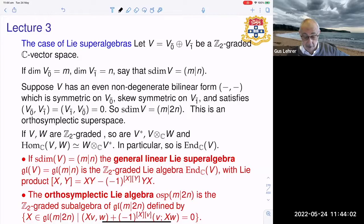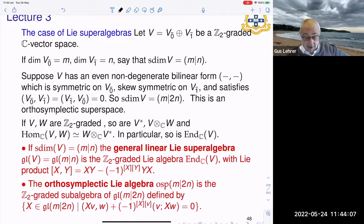So the orthosymplectic Lie algebra is a Z_2 graded subalgebra of gl(m|2n) which is defined by the following equation. It's very similar to the case of a Lie algebra in the non-super world. You simply insist that <x,v,w> plus a certain sign times <v,x,w> is equal to zero. So you can see this incorporates both the orthogonal and symplectic cases. If you're in the orthogonal case everything is positive so this sign doesn't arise, and in the symplectic case you have the opposite, you always get a minus one there.